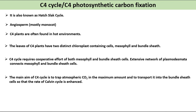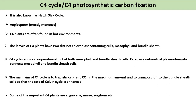The main aim of the C4 cycle is to trap atmospheric CO2 in maximum amounts and to transport it into the bundle sheath cells so that the rate of the Calvin cycle is enhanced. Some important C4 plants are sugarcane, maize, and sorghum.